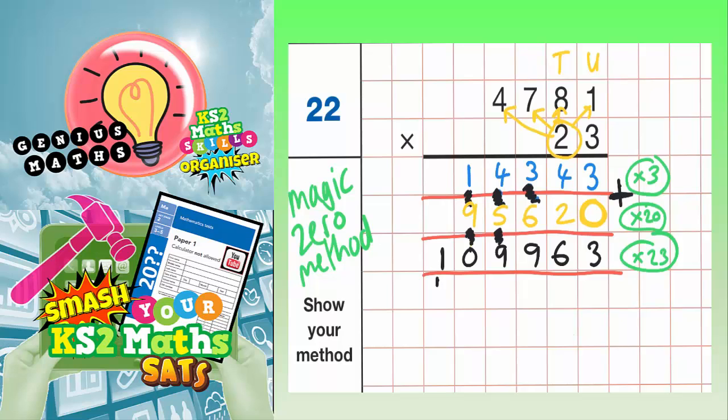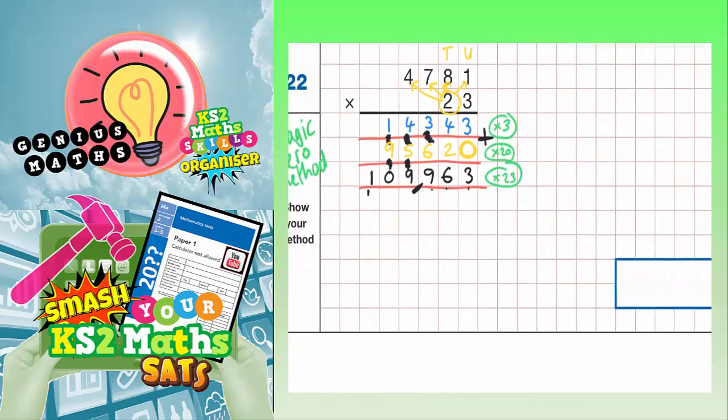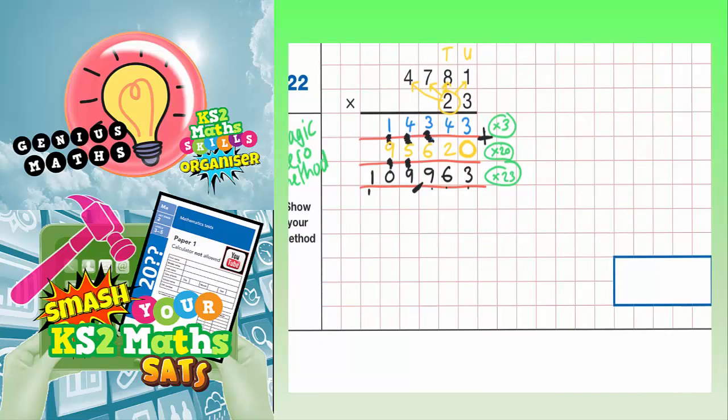If you can't read the number, remember you go 1, 2, 3, put a comma. So 109,963. So let's just zoom out to see our answer box. Because that is the number that now needs to get written inside our answer box. 109,963.